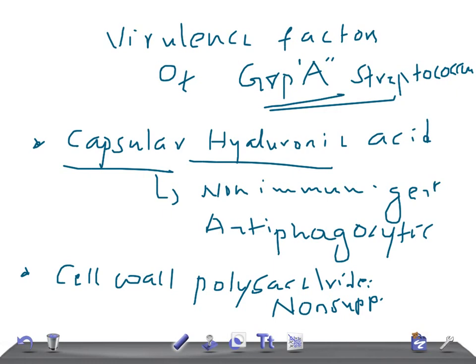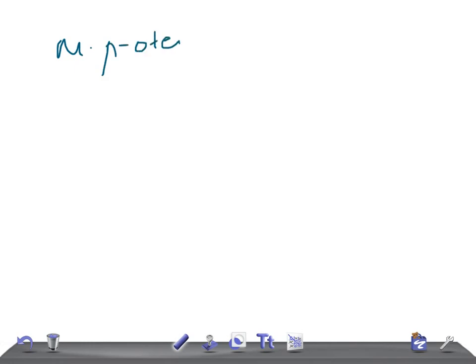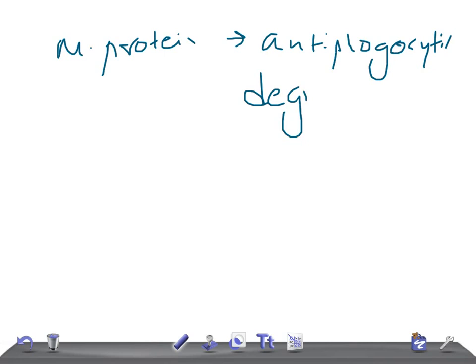Moving on to another virulence factor: M protein. The role of M protein is that it acts as anti-phagocytic, and very importantly, it degrades the C3b complement factor — really very important to remember.